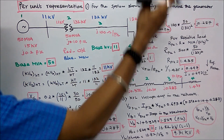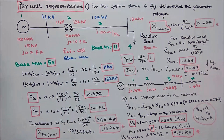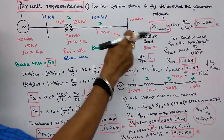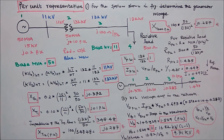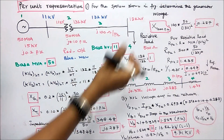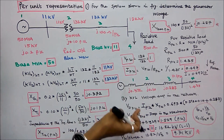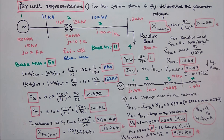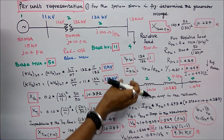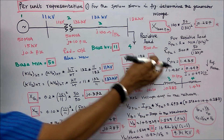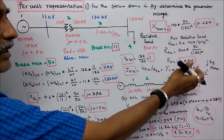Resistive load per unit = 500 × (50 / 132²) = 1.435 per unit. Bus voltage per unit = actual / base = 132 / 132 = 1 per unit. Current per unit = V per unit / R per unit = 1 / 1.435 = 0.697. Taking current as reference: I per unit = 0.697 angle 0°.